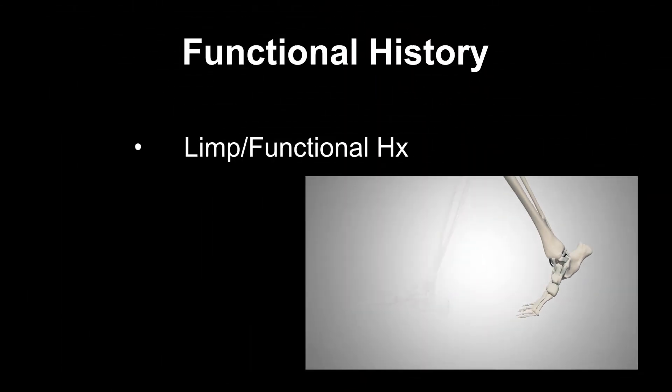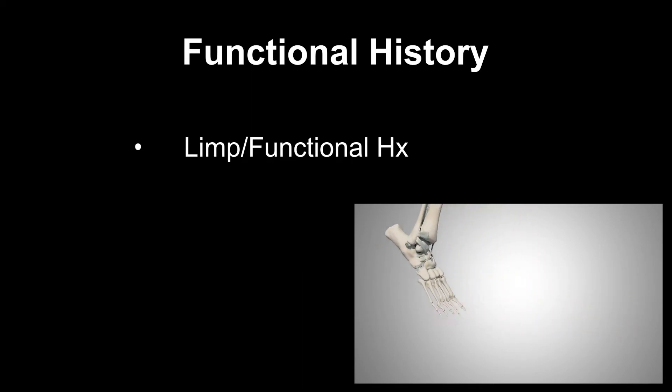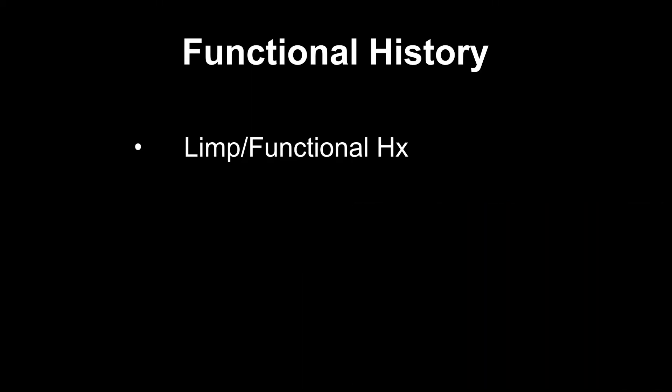Then move to a functional history. Inquire about any limp, walking distance, inability to run or negotiate stairs, and impacts on activities of daily living. Ask about stiffness — is it in the morning or night, is it bilateral in location, and screen for other joint involvement. Regarding swelling, ask about length of time, progression, whether it is painful, whether it is local or generalised, and whether it is associated with any injury.